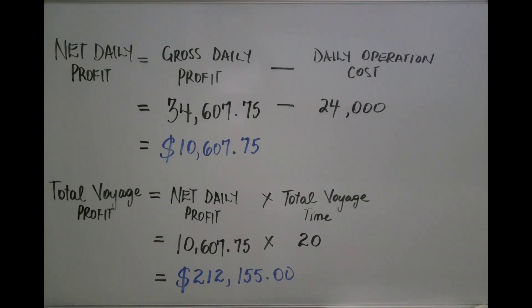Moving on to net daily profit: the formula is gross daily profit minus the daily operational cost (DOPC or running cost). So $34,607.75 − $24,000 = $10,607.75 net daily profit.